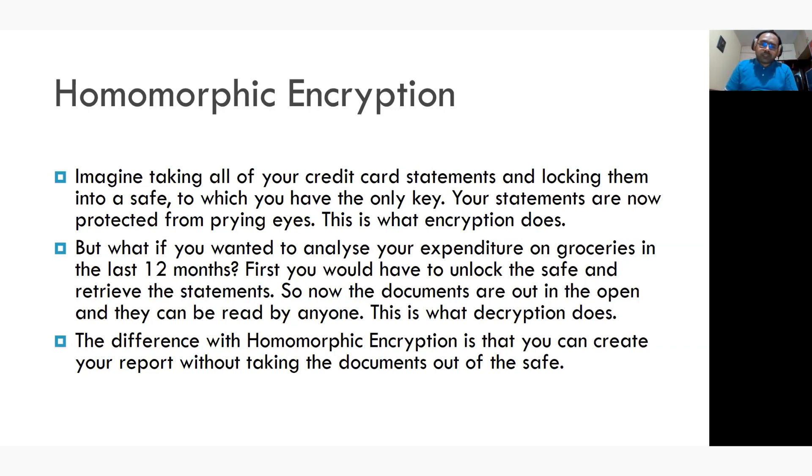But what if you wanted to analyze your expenditure on groceries in the last 12 months? First, you would have to unlock the safe and retrieve the statements. So now the documents are out in the open and they can be read by anyone. This is what decryption does. The difference with homomorphic encryption is that you can create your report without taking the documents out of the safe.